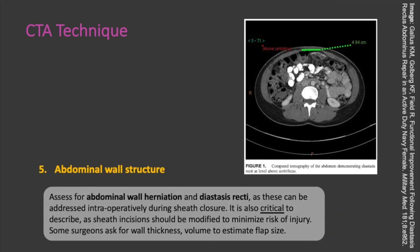The final step in CTA interpretation is assessing the abdominal wall structure. You want to look for abdominal wall herniation and diastasis recti, as both of these issues can be addressed intraoperatively during sheath closure. It is also critical to describe these findings, as sheath incisions should be modified to minimize risk of injury to underlying bowel. Some surgeons ask for wall thickness or volume to estimate the flap size.